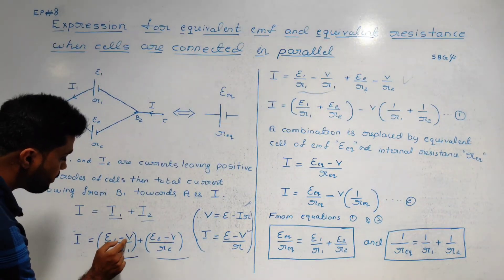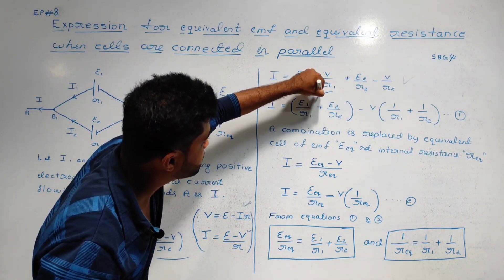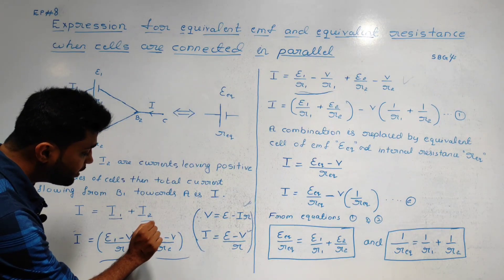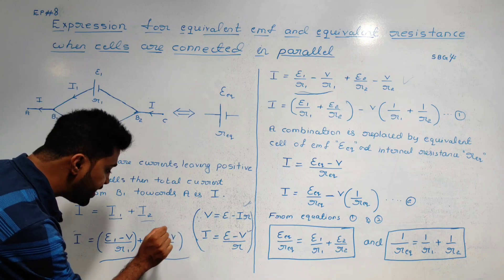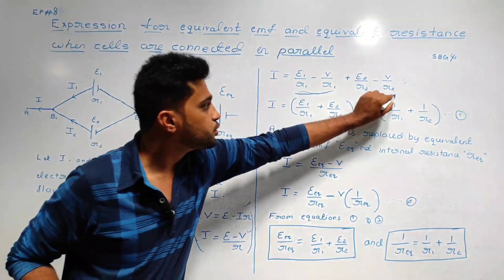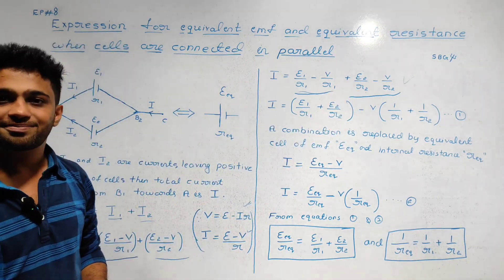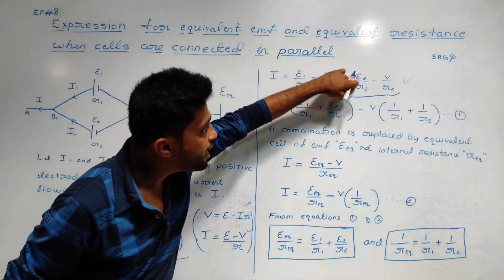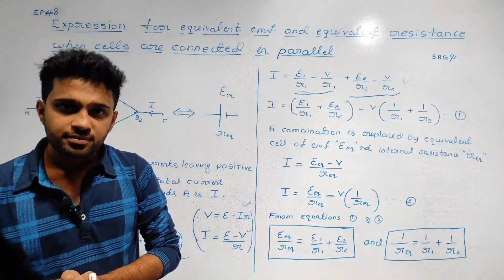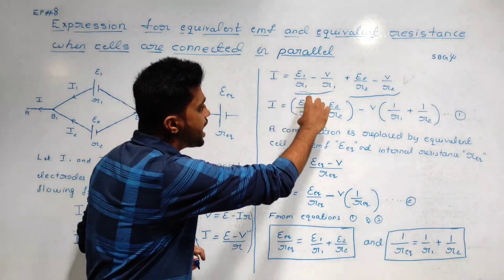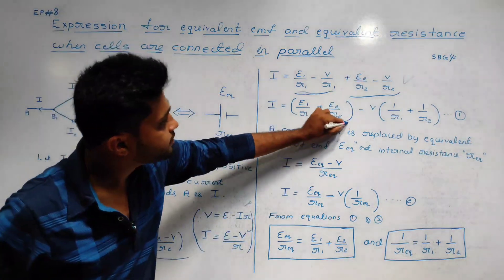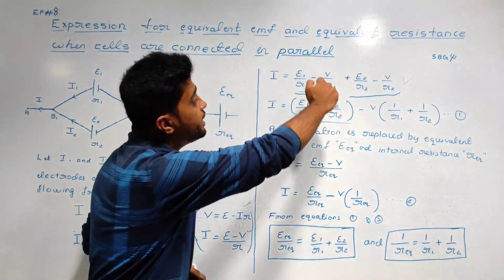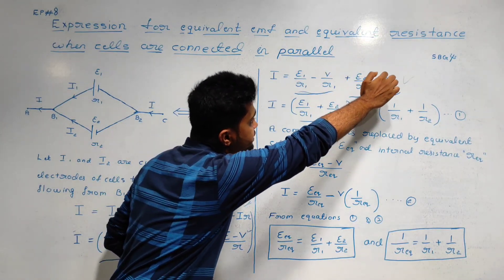Applying the equation to each cell: I1 equals E1 by r1 minus V by r1. I2 equals E2 by r2 minus V by r2. Combining: I is equal to E1/r1 plus E2/r2, minus V times (1/r1 plus 1/r2). This is equation number one.